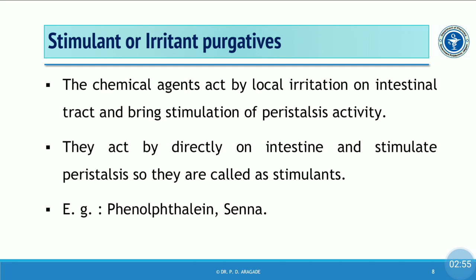First is stimulant or irritant type purgatives. These are chemical agents which act by local irritation on the intestinal tract and bring stimulation of peristalsis activity. Because of the irritation of the intestinal tract, there is stimulation of secretion of excess fluids and electrolytes within the intestine, leading to stimulation of peristalsis. They act directly on the intestine and are therefore called stimulants. For example, phenolphthalein and senna.